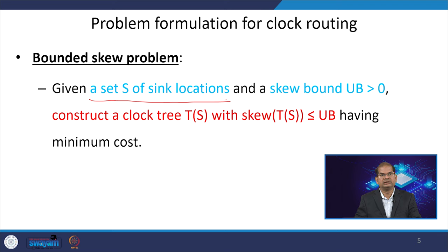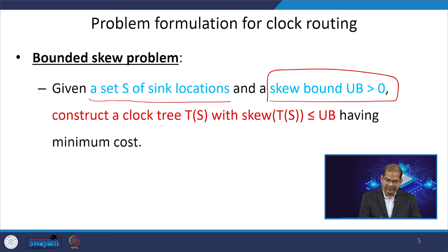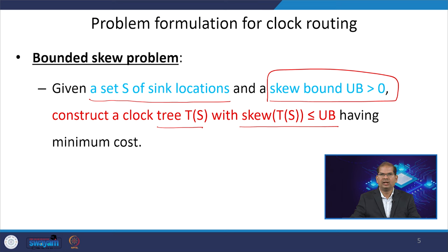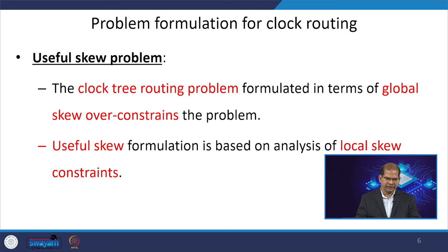Given a set S of sink locations — the locations of flip-flops and latches where the clock is connected — and a skew bound U_b greater than 0, we need to construct the clock tree T(S) with skew bounded by T(S) ≤ U_b, having minimum cost. Minimum cost means the delay through the clock tree or interconnect delay should be as minimum as possible, since inserting buffers also consumes power. This cost includes interconnect delay and power consumption through buffers.